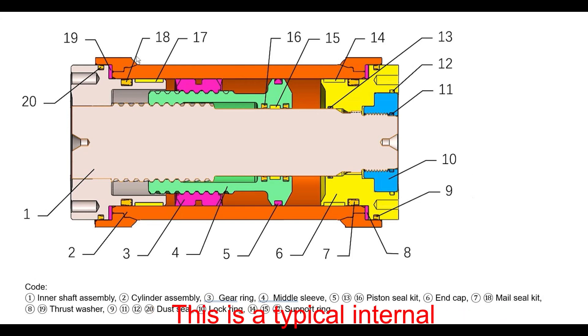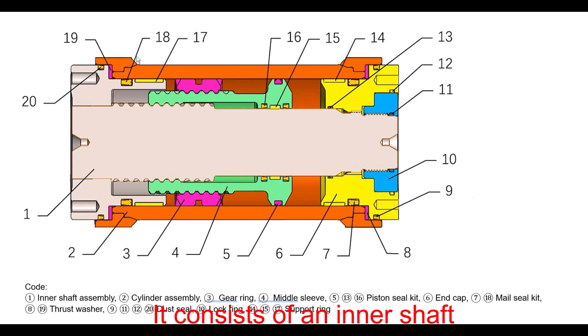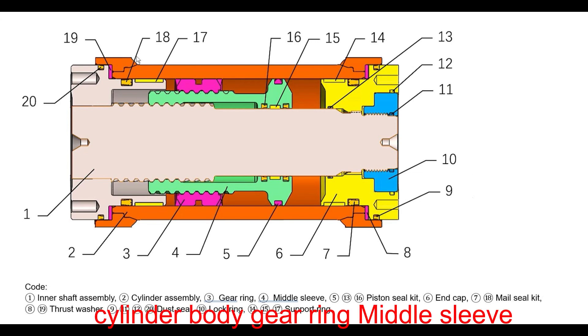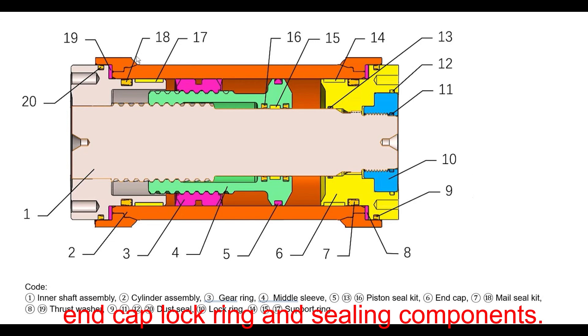This is a typical internal structure of a rotary actuator. It consists of an inner shaft, cylinder body, gate ring, middle sleeve, uncapped lock ring, and sealing components.